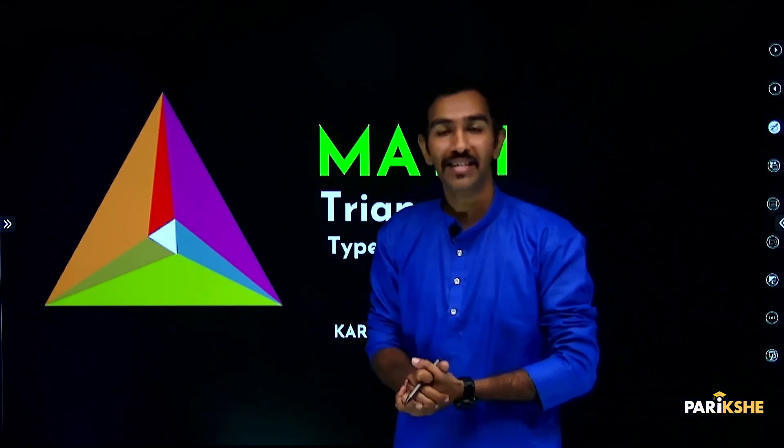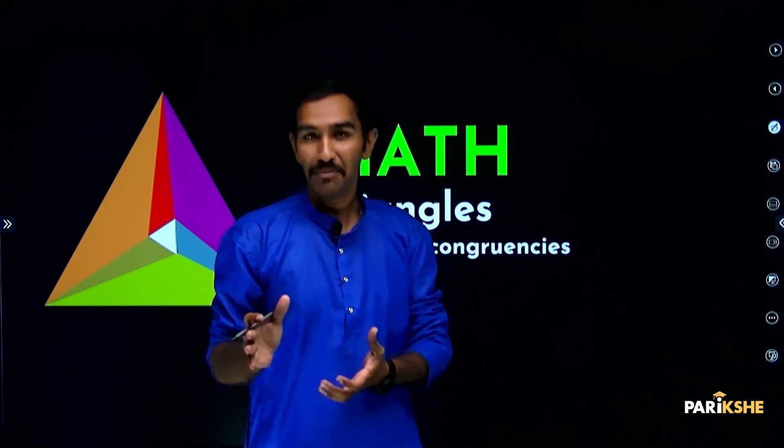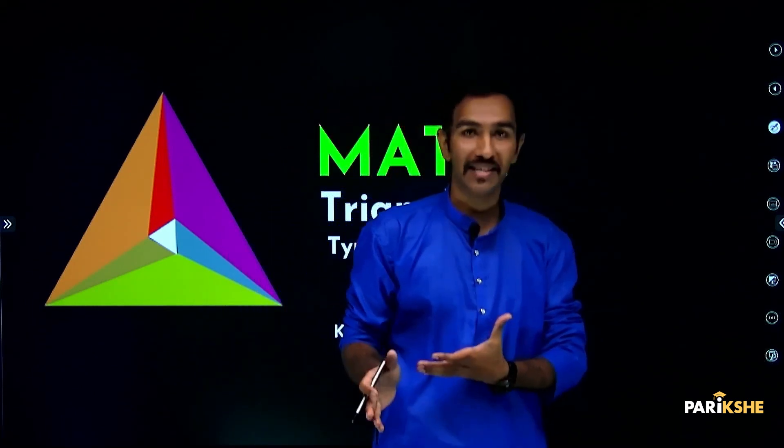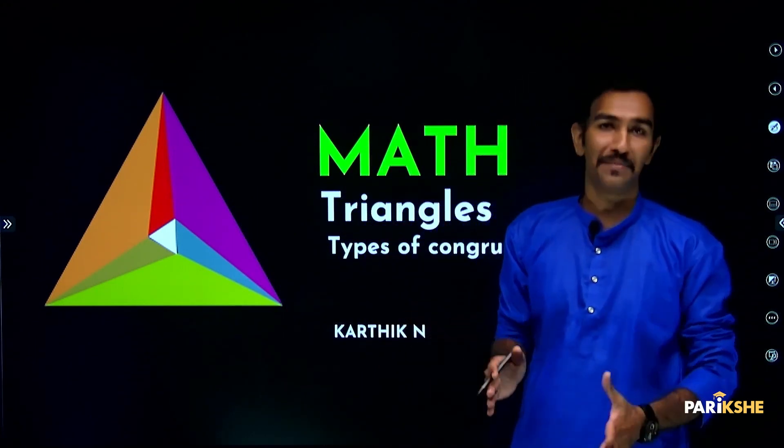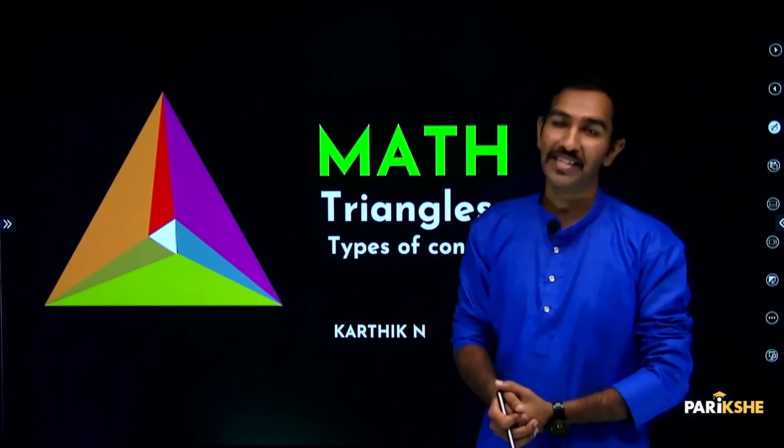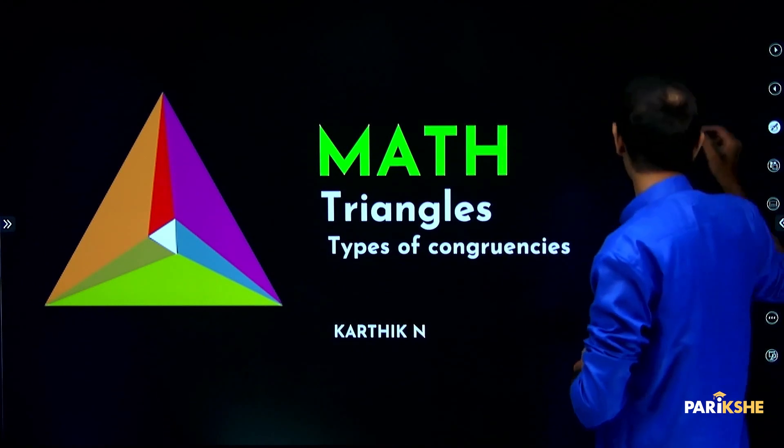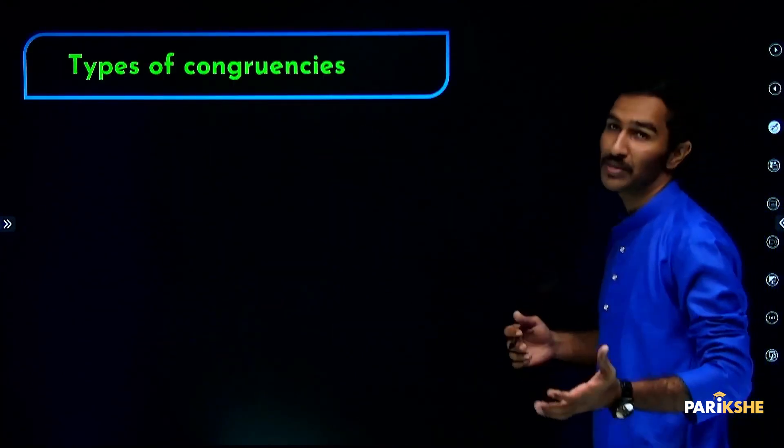We have already seen types of similarities. Similarity means same shape but different size. Congruency means same shape and same size. This is called congruent.